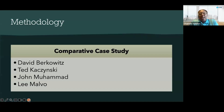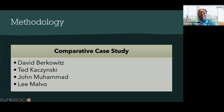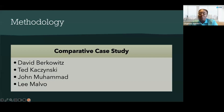The methodology is the comparative case study. We have David Berkowitz, known as the Son of Sam, a convicted serial killer; Ted Kaczynski, the Unabomber, convicted of domestic terrorism; and John Muhammad and Lee Malvo, collectively known as the DC Snipers. John Muhammad was convicted as a domestic terrorist; Lee Malvo was convicted of murder, not terrorism. Using the comparative case study, we examine these four individuals.